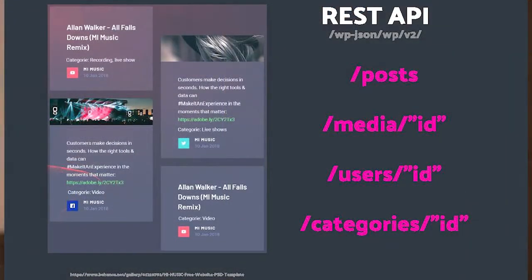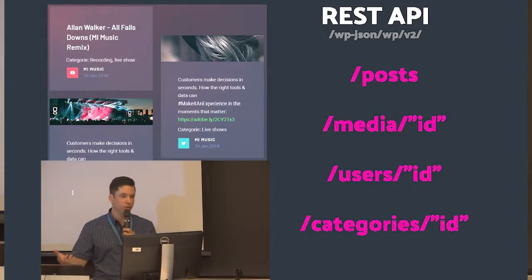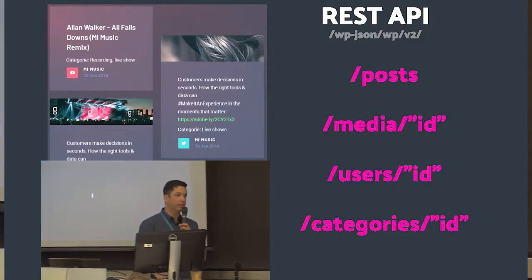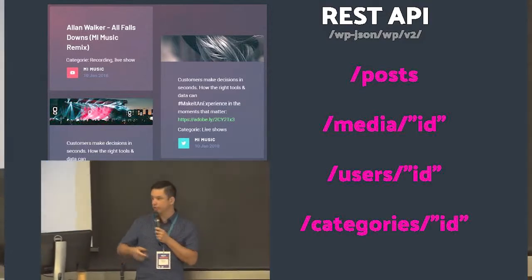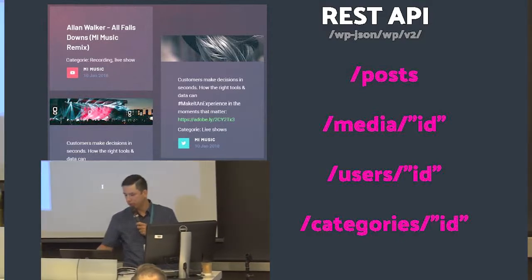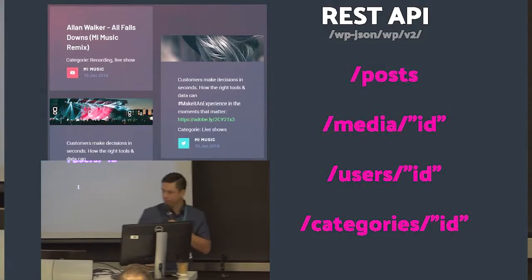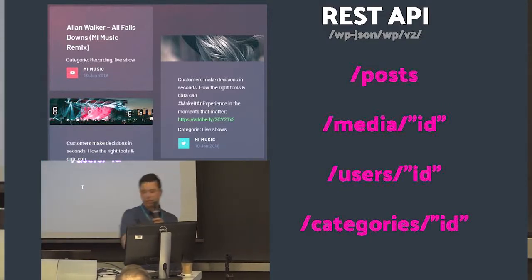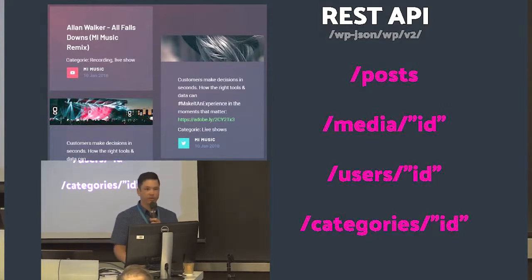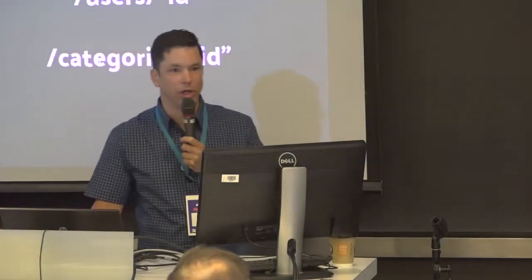In order to build your UI, you need to hit the posts endpoint to retrieve the posts. But to retrieve the featured image, you need to hit another endpoint — media — with the ID of your featured image that you got from the posts endpoint. Then you need to hit another endpoint for the user information, and again for category. As you can see, that can be a lot of hitting endpoints to build your entire UI.